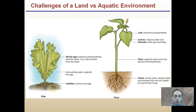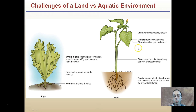Comparing algae to a terrestrial plant: the whole algae performs photosynthesis, surrounding water supports it, and it can hold fast in the water. Terrestrial-based plants, however, have leaves, cuticles, stomata, stems, and roots to help support them — and we're going to go over these in detail.